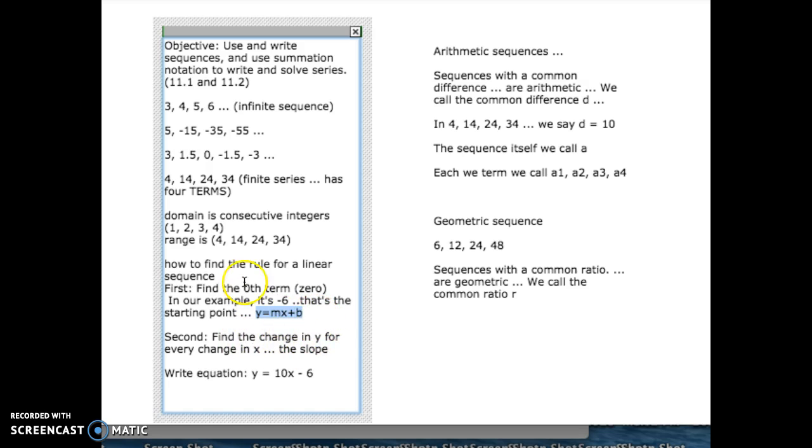Then we need to find the change in y for every x. Well, we already did that. In other words, how much is y changing by? Every time we go over 1 in the domain, we're going up 10 in the range. Over 1, up 10. Over 1, up 10. So that means our slope is 10. So that change is 10.